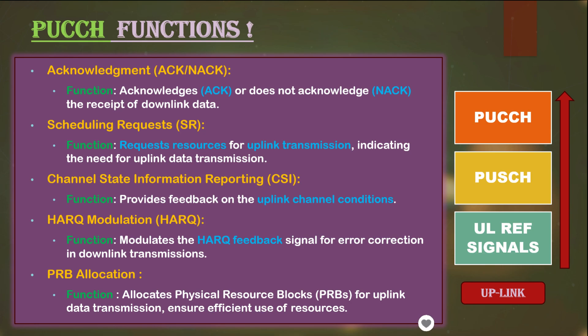The common control channel in the uplink is called PUCCH. This channel carries information from different users sending data from the device to the base station. This information can include scheduling of transport blocks and resources, as well as feedback information that the device needs to send back to the base station, like ACK or NACK.